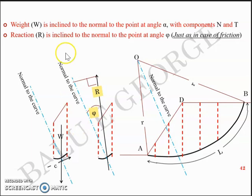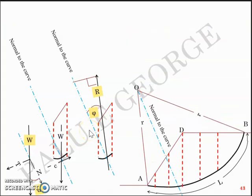Now the weight W is inclined to the normal to the point at angle alpha with the components N and T. So if I can resolve weight W in the direction of the normal, I can have N and if I resolve weight W in the direction perpendicular to the normal, I can have T tangential.